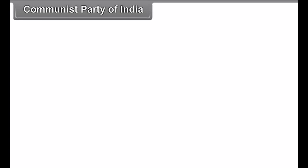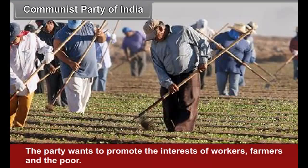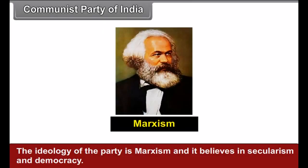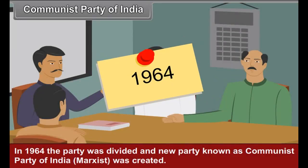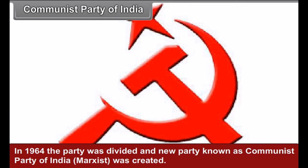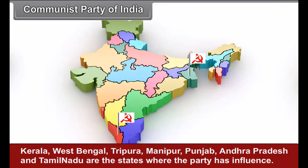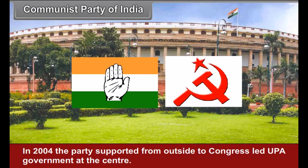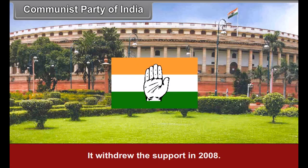Communist Party of India: Established in 1925, the party wants to promote the interests of workers, farmers, and the poor. The ideology of the party is Marxism, and it believes in secularism and democracy. In 1964, the party was divided and a new party known as the Communist Party of India (Marxist) was created. Kerala, West Bengal, Tripura, Manipur, Punjab, Andhra Pradesh, and Tamil Nadu are states where the party has influence. In 2004, the party supported from outside the Congress-led UPA government at the centre, and withdrew its support in 2008.